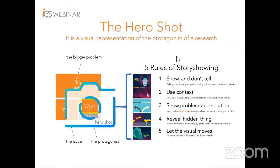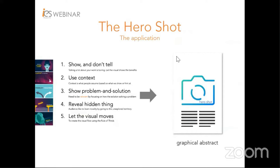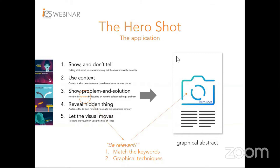So how could we use a hero shot? A hero shot can be used directly as a graphical abstract. Graphical abstracts are usually submitted upon the request of some publishers together with your manuscript. One quick check is always making sure your graphical abstract relates to all your keywords — meaning, if you look at the graphical abstract alone, you will be able to link back to the keywords. If it is unclear, you need to use a few graphical techniques to improve the relevance.